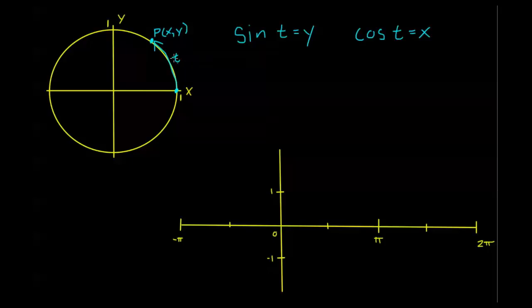So for any real number t going around in the unit circle, whatever our terminal point is, it is the x coordinate of that point which we define to be cosine of our t and the y coordinate of that point which we define to be sine of our t. So we can use this fact to kind of look at these graphs.